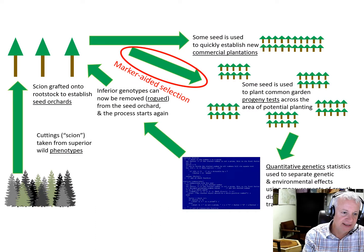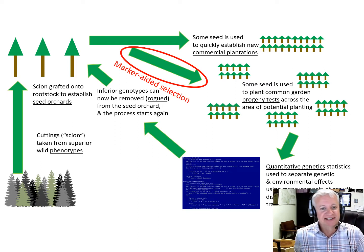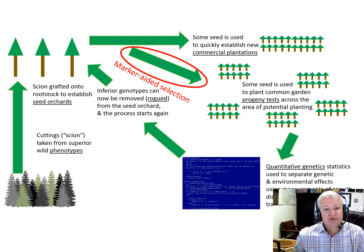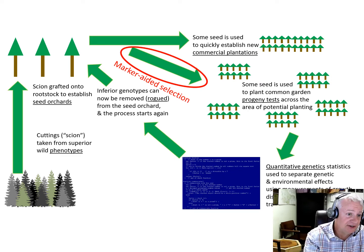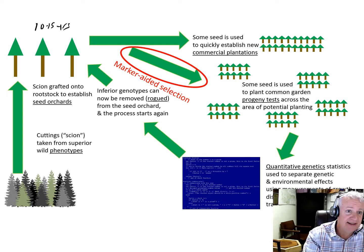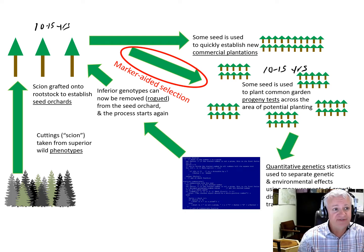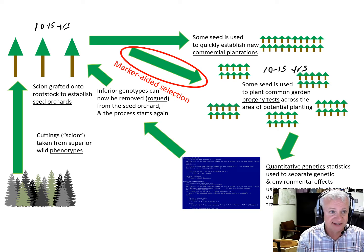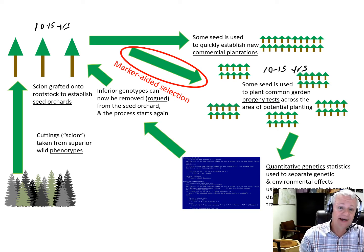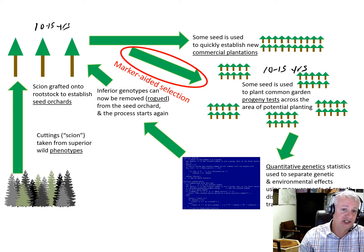That's how transgenics can speed up the tree improvement process. This has been a constant source of angst in tree breeding — it takes so long. The initial seed orchard phase may take 10 to 15 years, and the progeny testing phase may take another 10 to 15 years. There's been a lot of work to figure out how to speed up this process so that a cycle doesn't take 20 to 30 years. One approach is marker-aided selection or genomic selection.